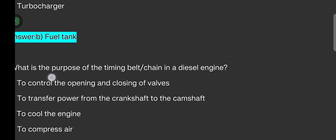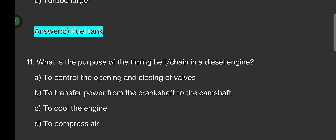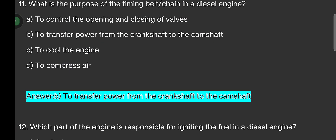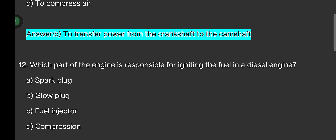What is the purpose of the timing belt or chain in a diesel engine? Options are: to control the opening and closing of fuel valves, to transfer power from the crankshaft to the camshaft, to cool the engine, to compress air. The answer is: to transfer power from the crankshaft to the camshaft.